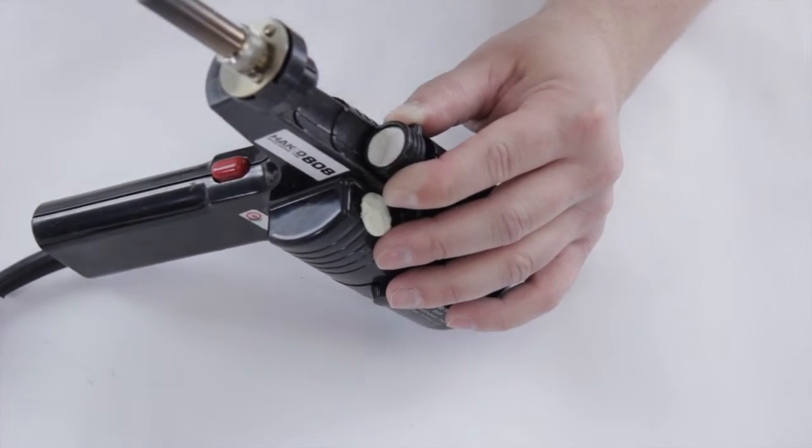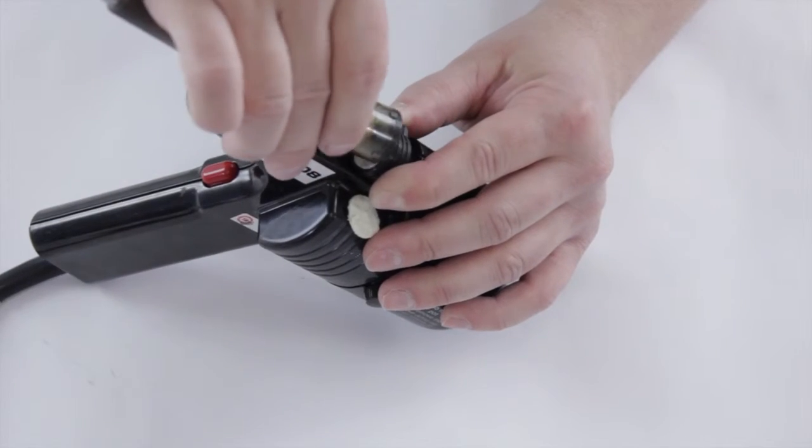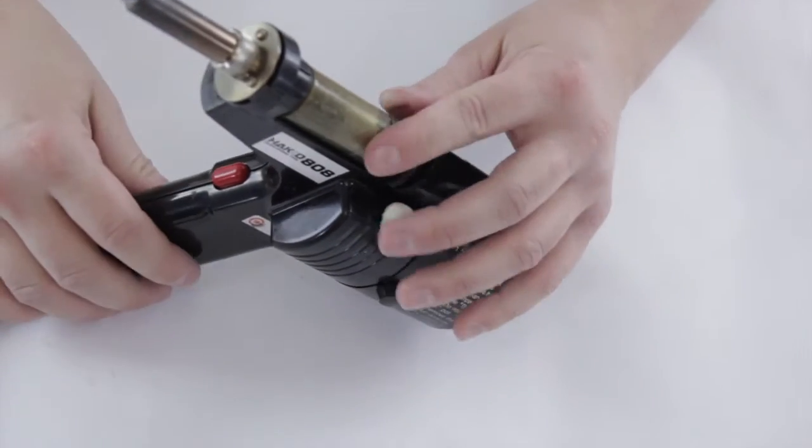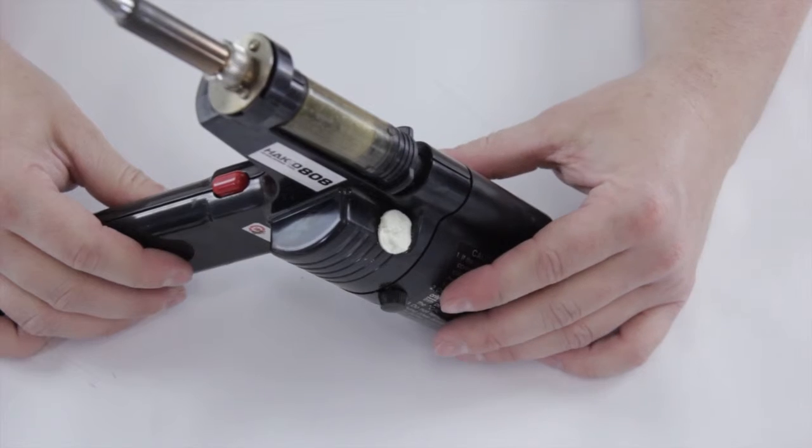So gently push it in. Replace the cartridge. And there you go. We just changed the filter on the Hakko 808, and now you're ready to desolder again.